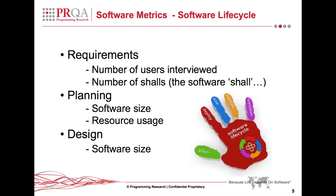Each phase of the software development lifecycle has its own set of relevant metrics. The requirements phase may be measured on the number of users interviewed, or maybe the type of user, which would show the breadth of the input. Once the requirements are written, the number of 'shalls' — as in 'the software shall do something' as opposed to 'the software should do something' — can be counted. Using data from previous projects, the number of defects traced back to the requirements phase could be used to prevent the same errors occurring again.